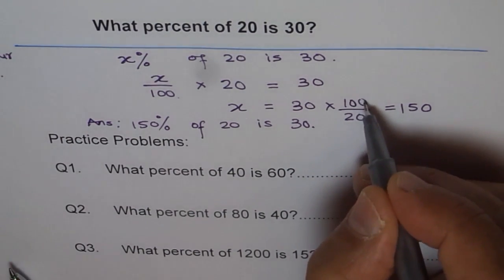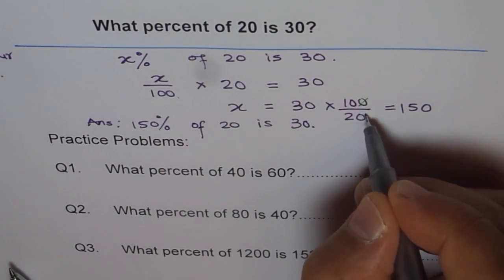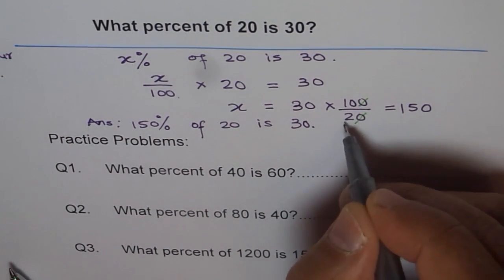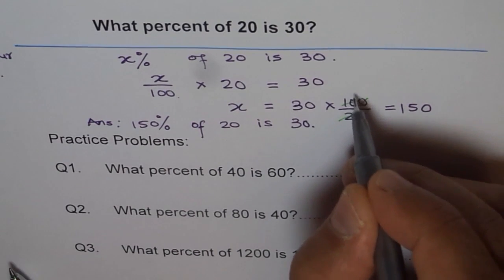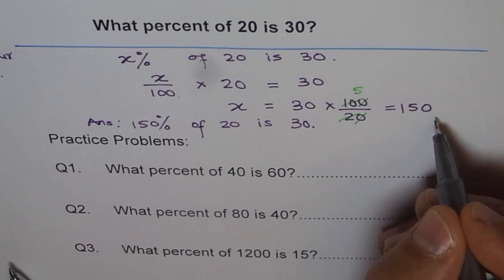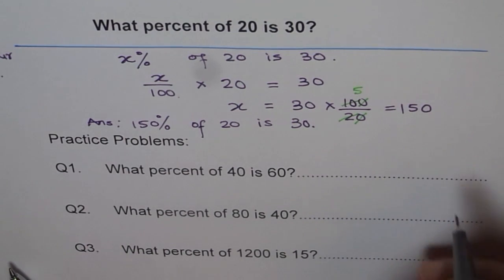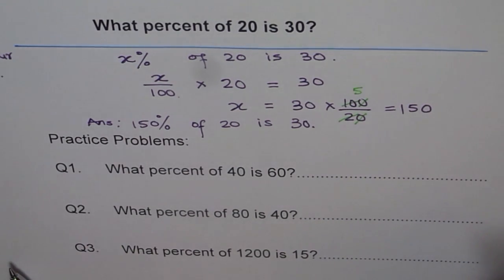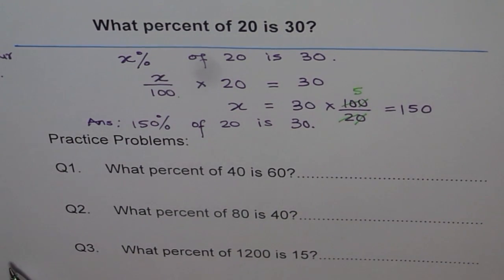You could simplify by canceling — divide both by 10, then divide 10 by 2 to get 5, and 5 times 30 is 150. So sometimes you can do it without a calculator, but I prefer you to use the calculator for now. Once you become conversant, then work without a calculator. Here are some practice problems for you.